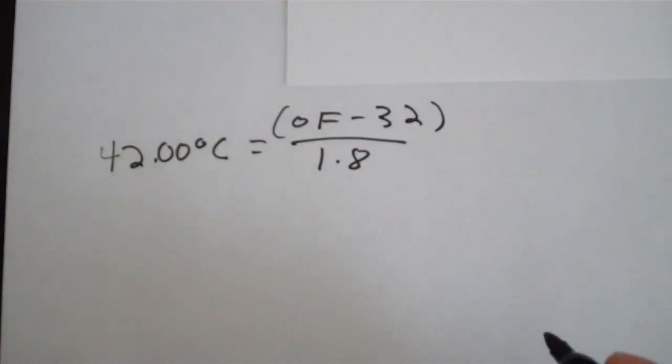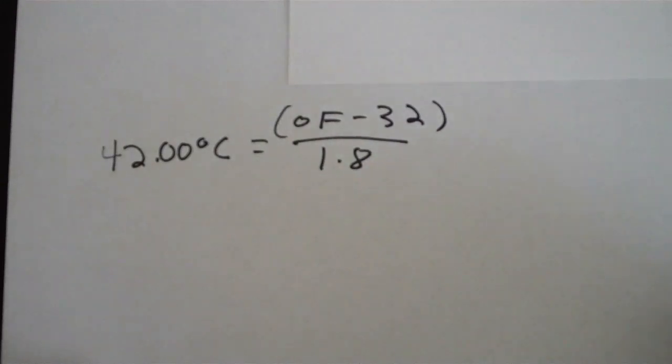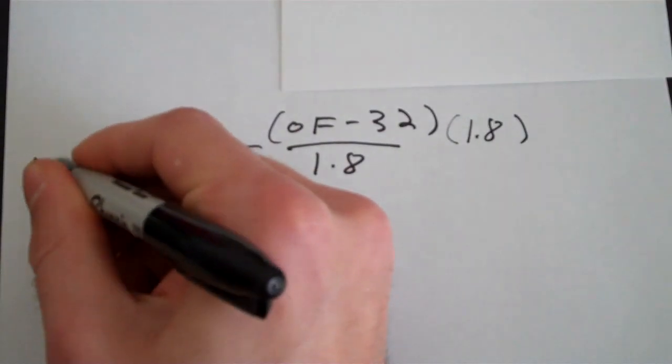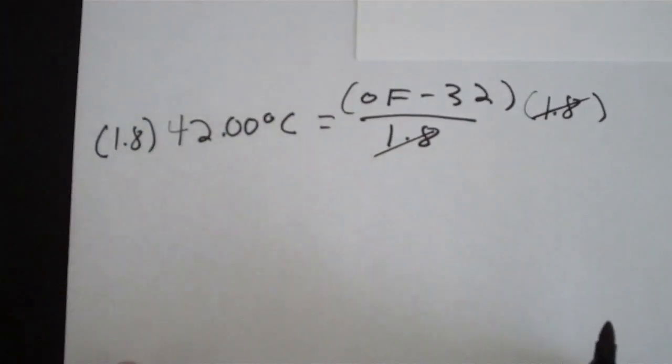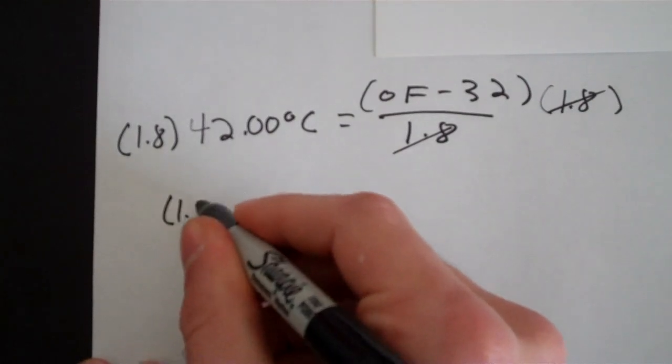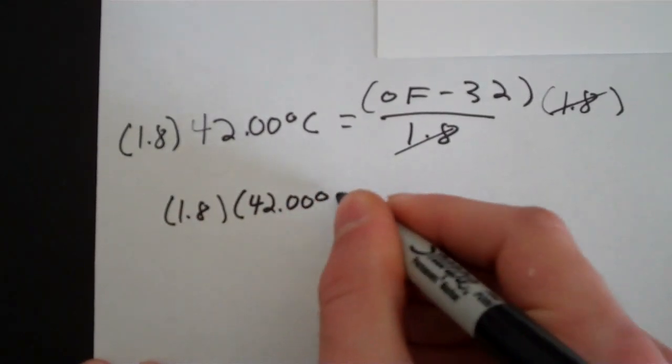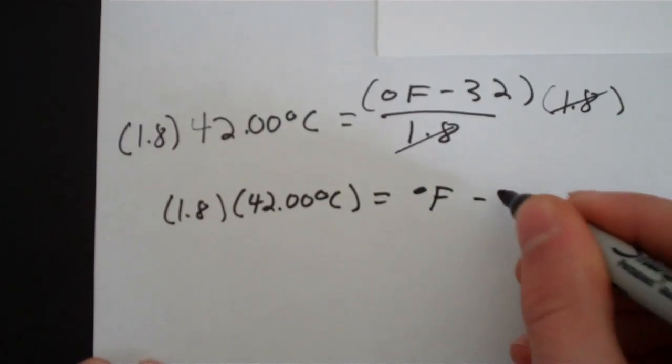We need to get the degrees Fahrenheit by itself and the only way to do that so far is to multiply both sides by 1.8. So I'm going to do just that. These two 1.8s cancel and we're left with 1.8 times 42.00 degrees Celsius equals degrees Fahrenheit minus 32.